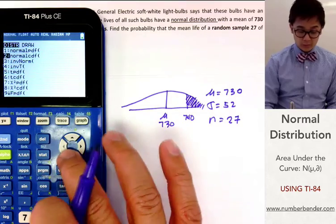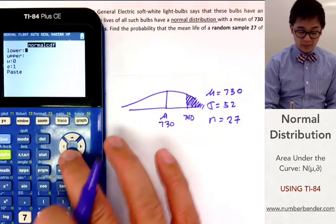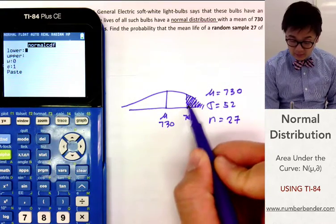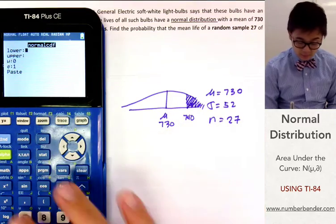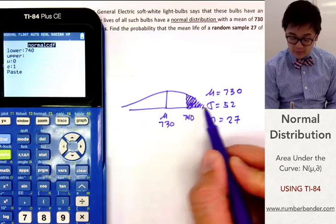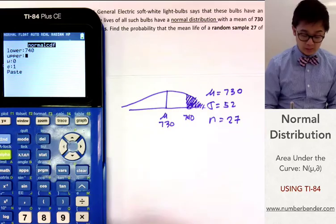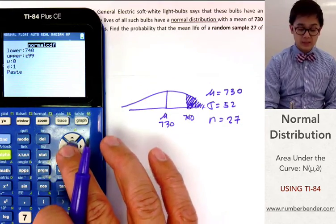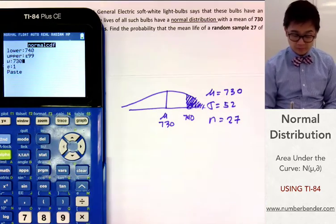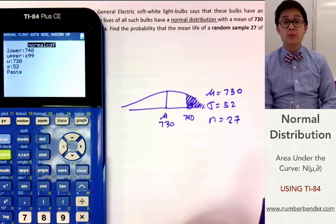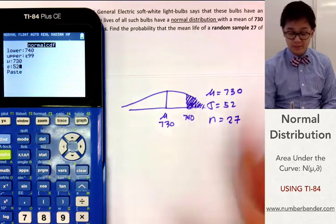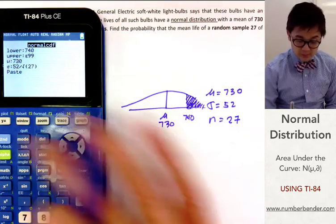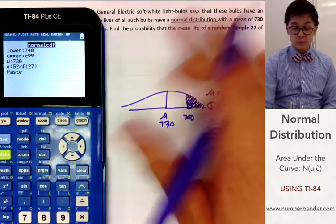Go to 2nd, then Vars, then Normal CDF. In the Normal CDF, it will ask for the lower, the upper, the mean, and the standard deviation. In this case, the area is from 740 and over, so the lower value is 740 and the upper value is positive infinity, represented as E99 on the TI-84. Our mean is 730 hours and our standard deviation is 52, but since we're using a sampling distribution with sample size 27, we divide sigma by the square root of 27.